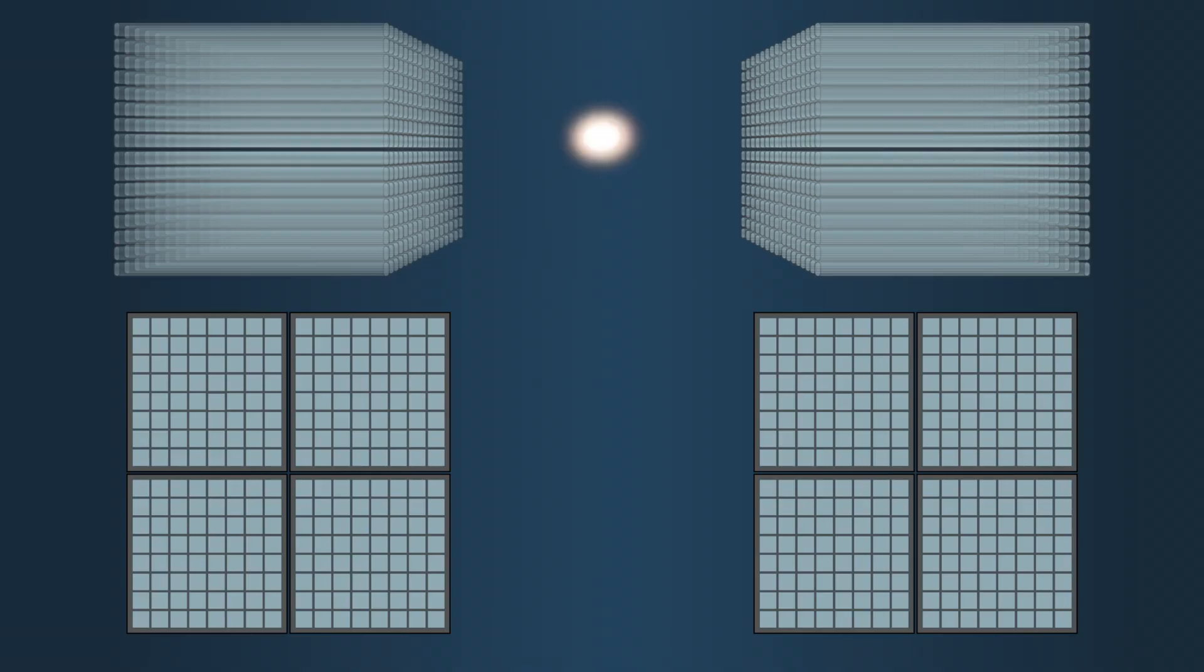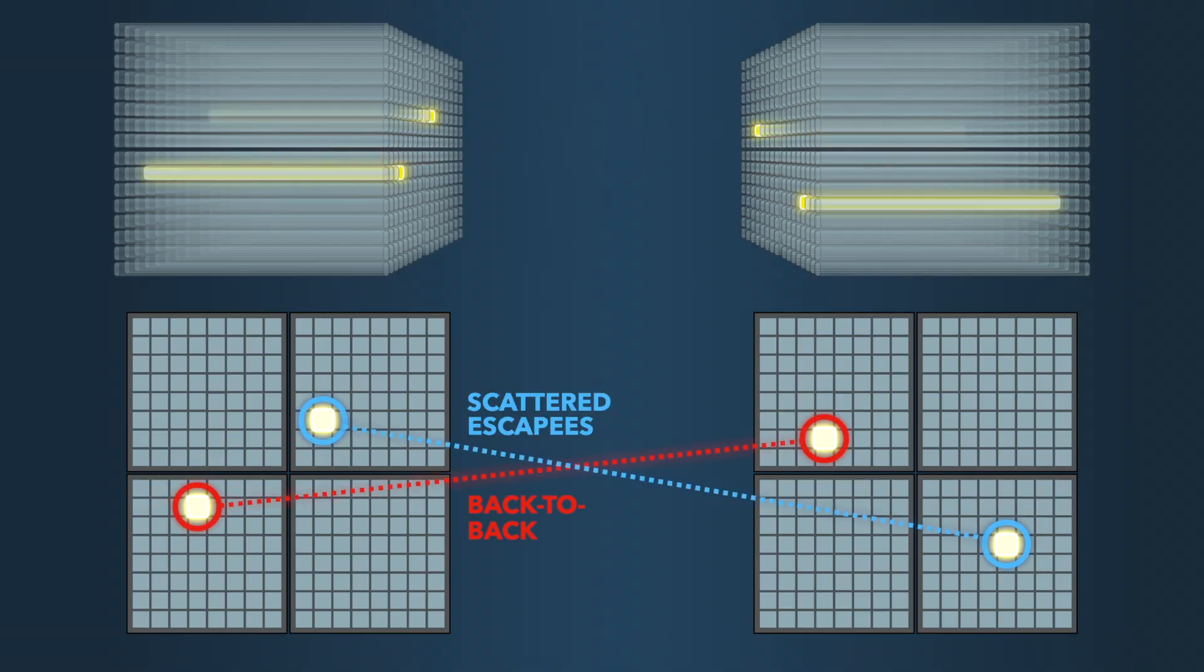We are really interested in the events where this happens in both our detectors, so we have a total of four hits. The two back-to-back and the two escapees, phi1 and phi2.